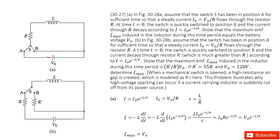I equals I0 times e to the power of negative T divided by tau. I0 is the initial current once the switch moves to B, so it equals V0 divided by R. The time constant tau equals L divided by R. Now, how can we find the induced EMF in this inductor? By definition, the induced EMF equals negative L di/dt. We can see the current decays with time t, so we substitute I into this expression.